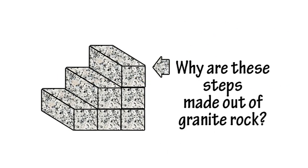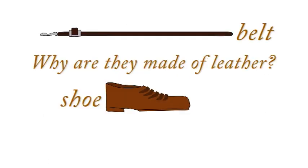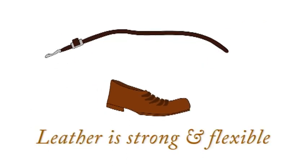What property of granite rock makes it useful for making steps? Granite rock is hard. What properties of leather make it useful for making shoes and belts? Leather is flexible and strong.